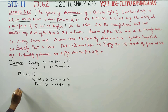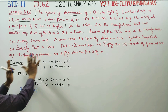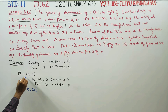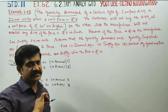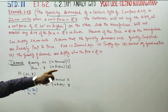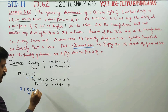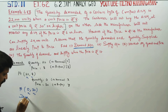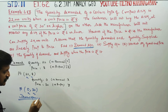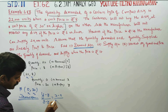The demand curve is a straight line, so we use the two-point formula. The first heading is the demand equation. The equation of demand uses the two-point formula: (y - y1)/(y2 - y1) = (x - x1)/(x2 - x1). The two points are (x1, y1) and (x2, y2).